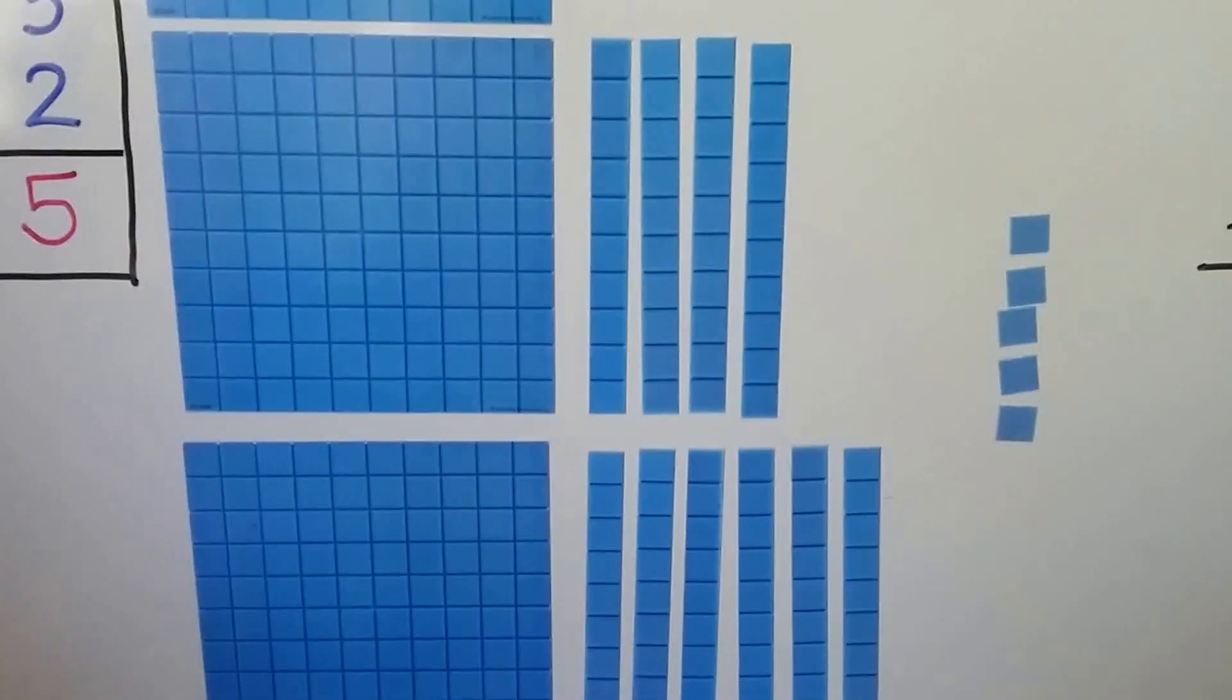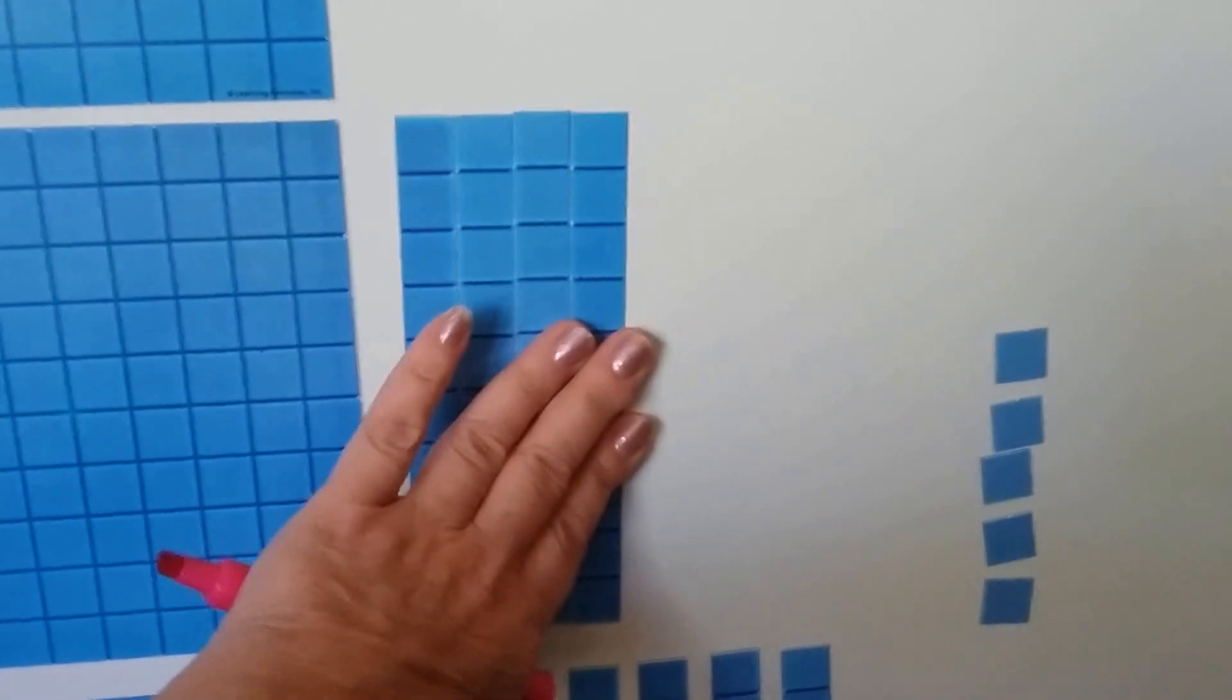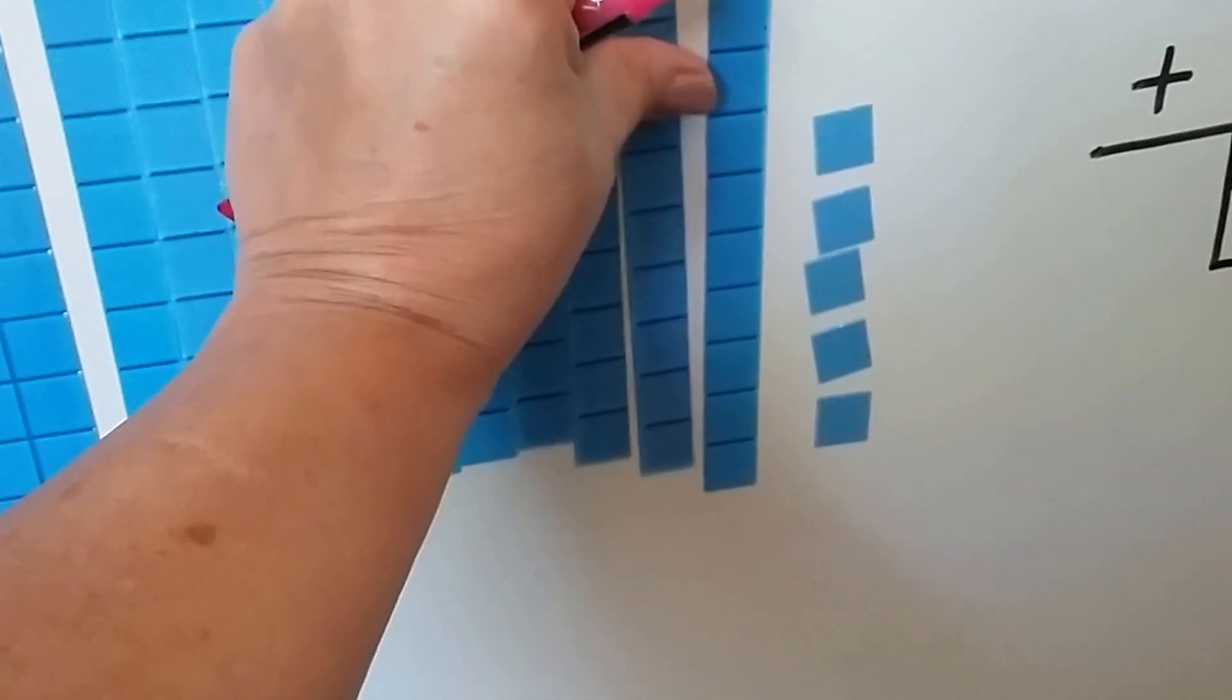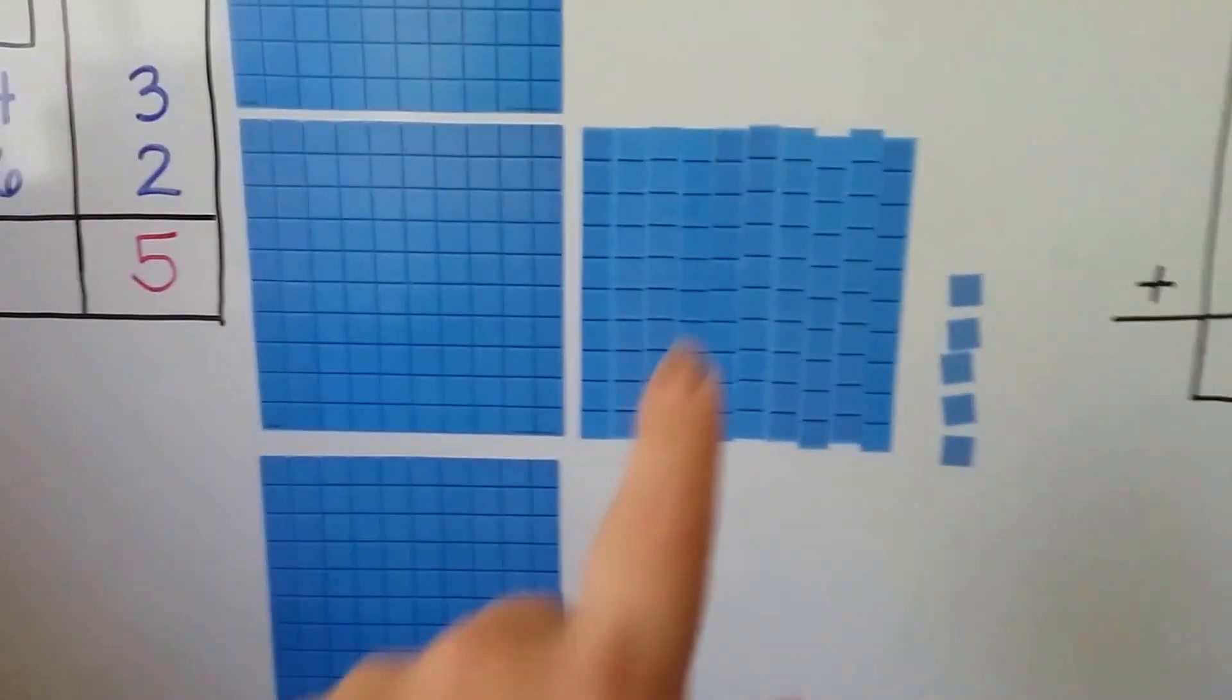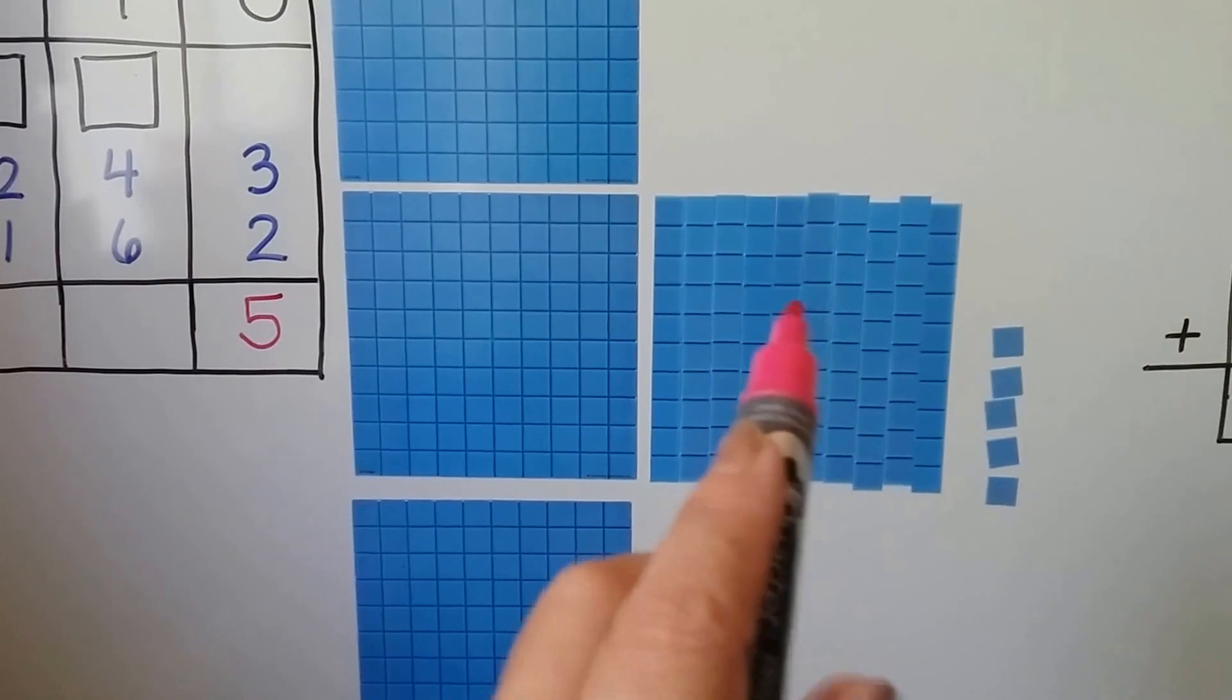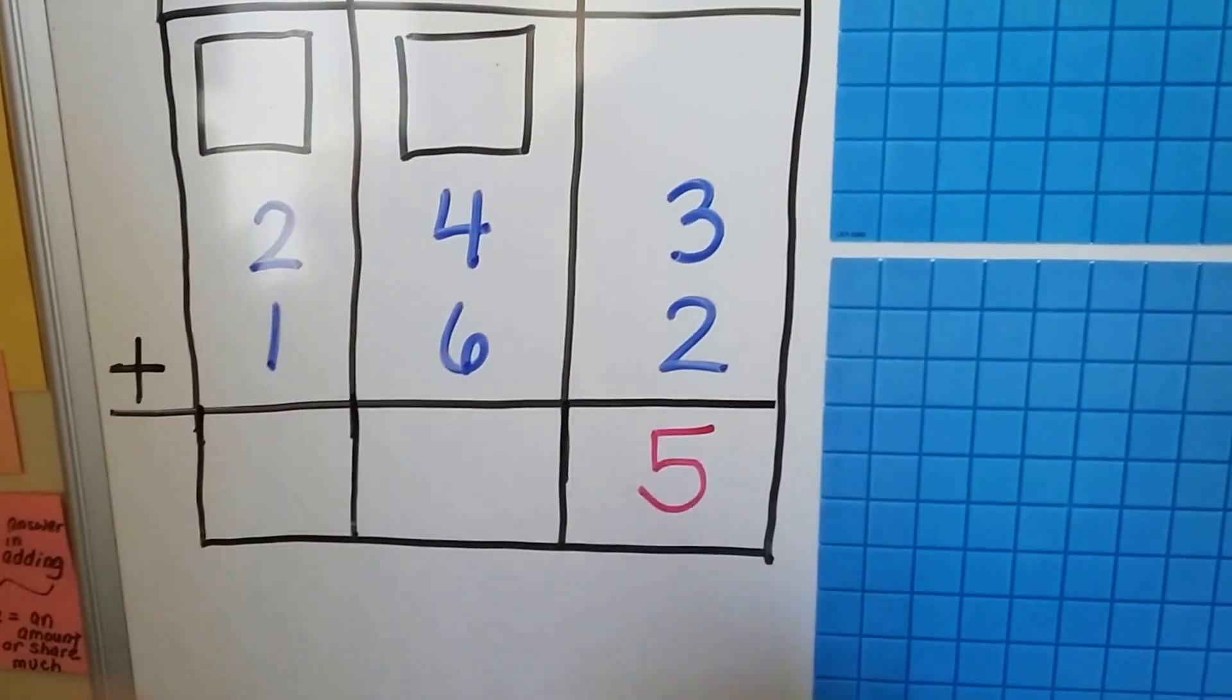But look at these tens. Do you think we can regroup them? If we put these four together and we move the six up here, look, it makes another hundred. Because we had four and six, and that makes ten. That makes another hundred. So we were able to regroup those tens, just like we did with two-digit numbers. Four plus six is ten.